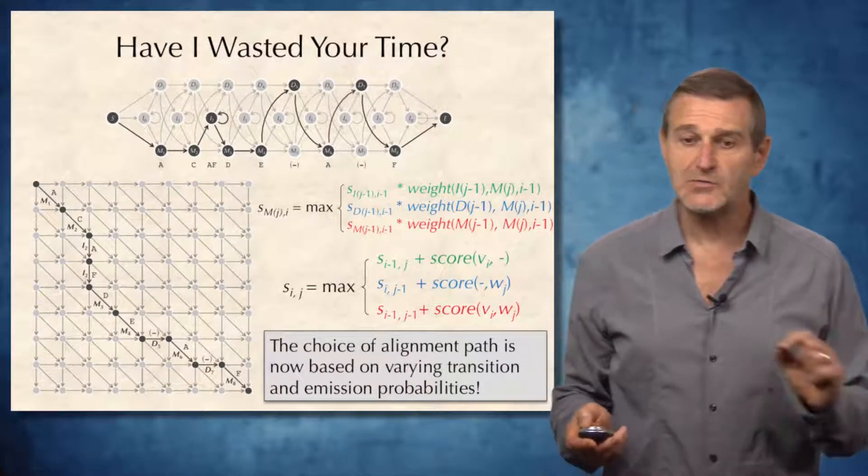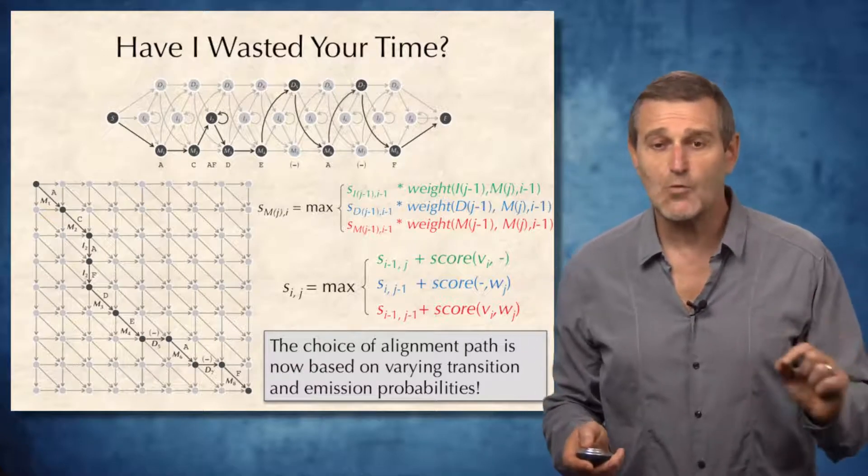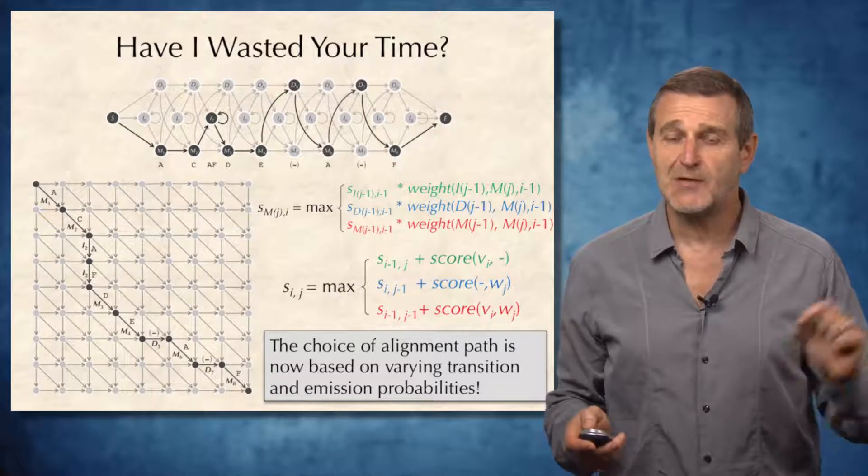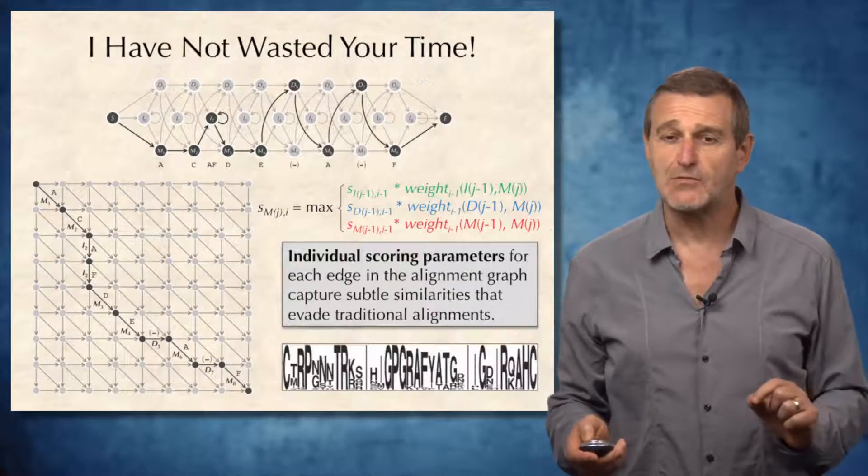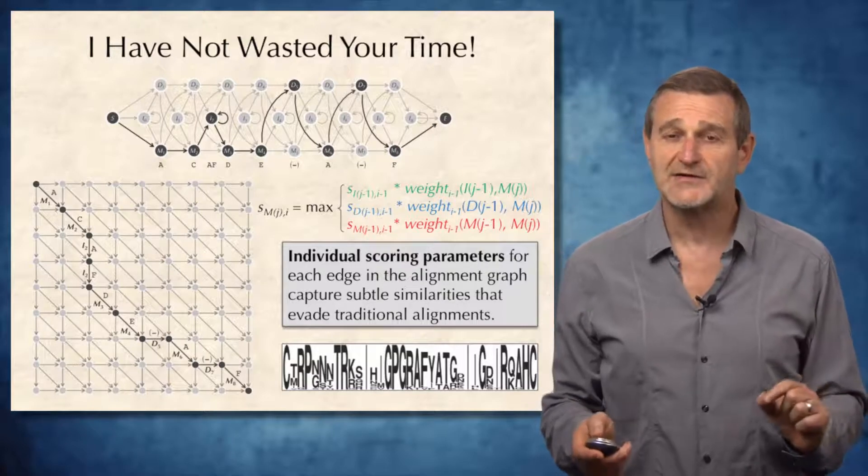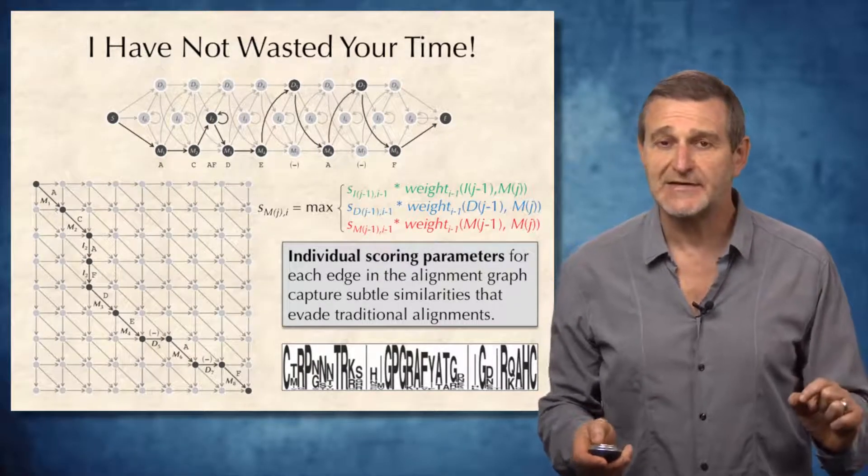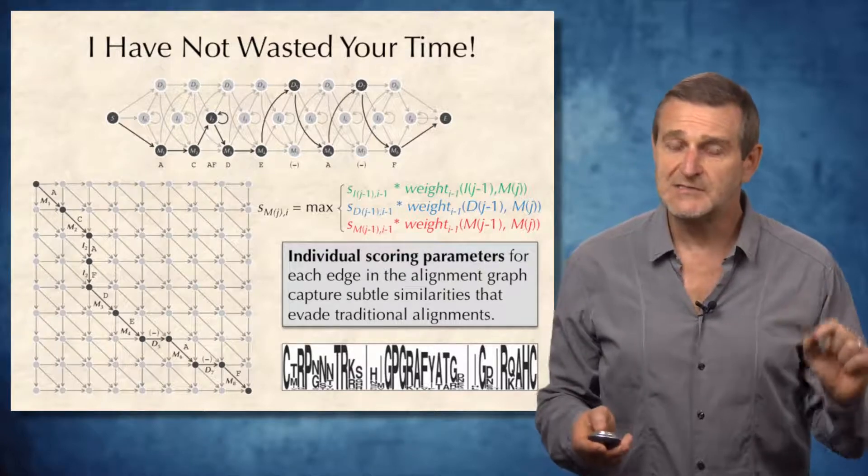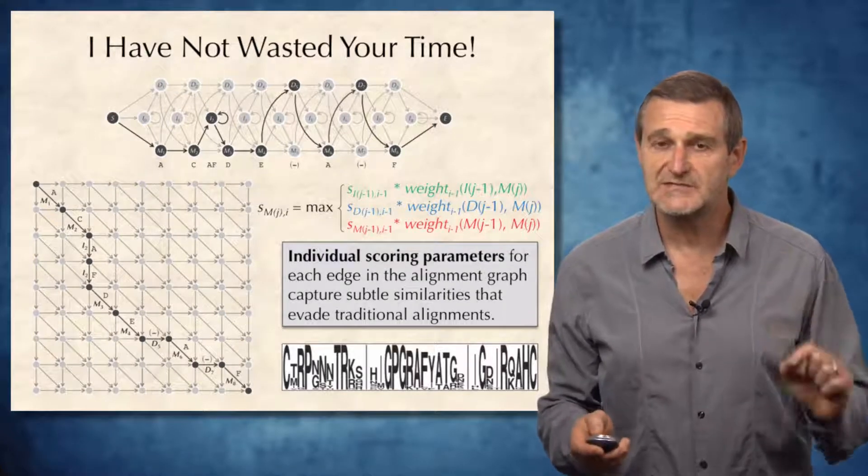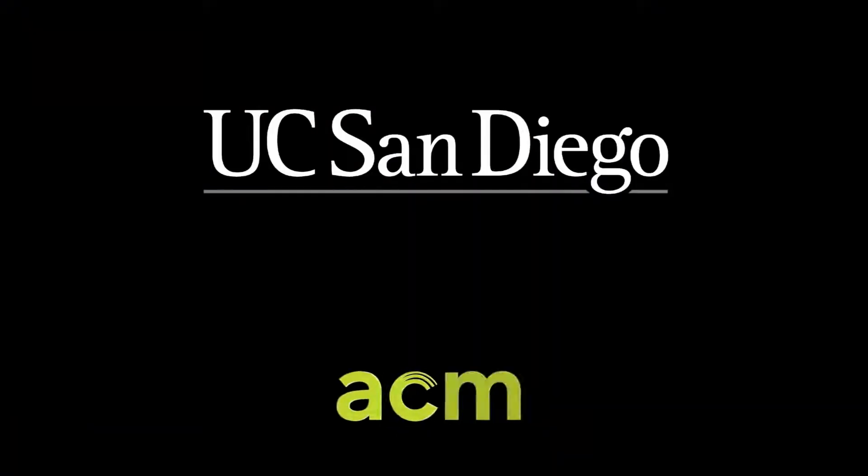However, notice that the choice of alignment paths is now based on varying transition and emission probabilities between different columns. And therefore, these individual scoring parameters allow us to detect subtle similarities using HMMs, similarities that traditional sequence alignment often misses.